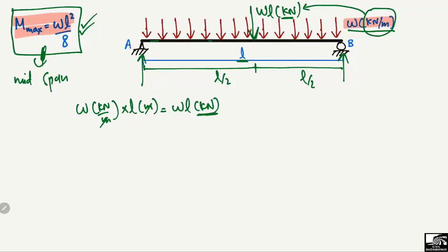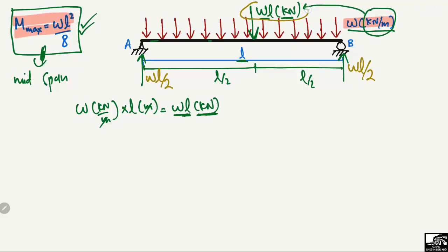Since wL is the total load acting at the midpoint, half the load will be transferred to each support. So each reaction is wL/2. This is simple mathematics — since the load is acting at the midpoint, equal load will be distributed to both supports: wL/2 and wL/2. That completes the first step of finding the support reactions.